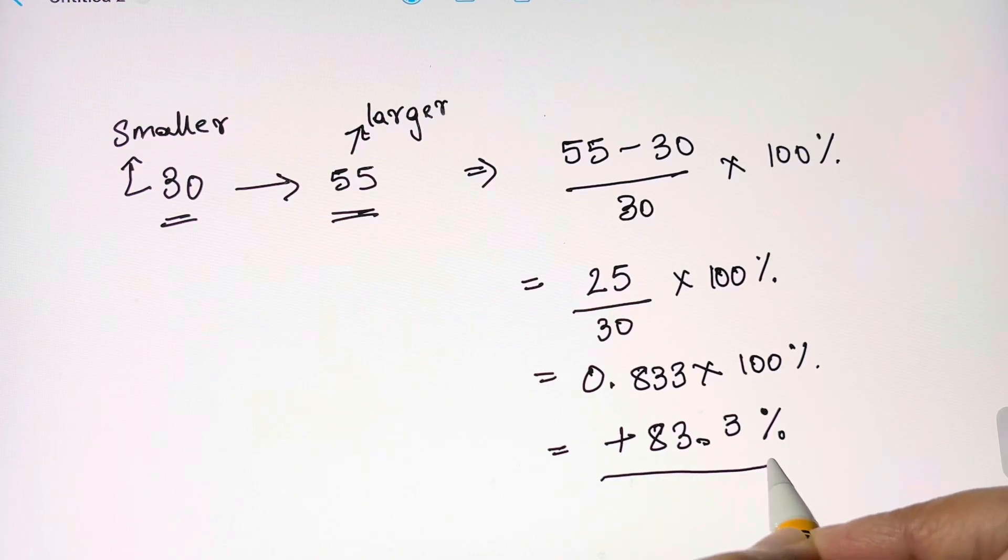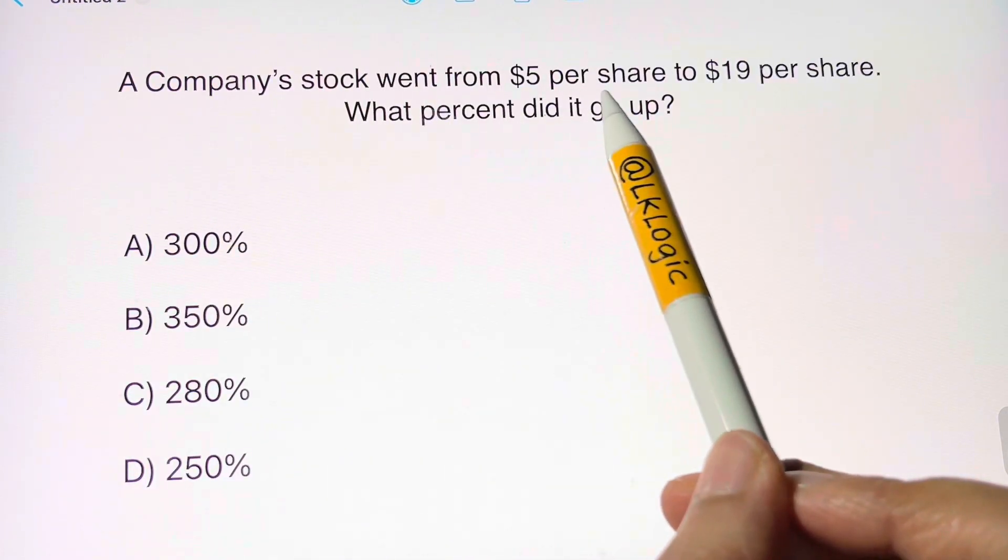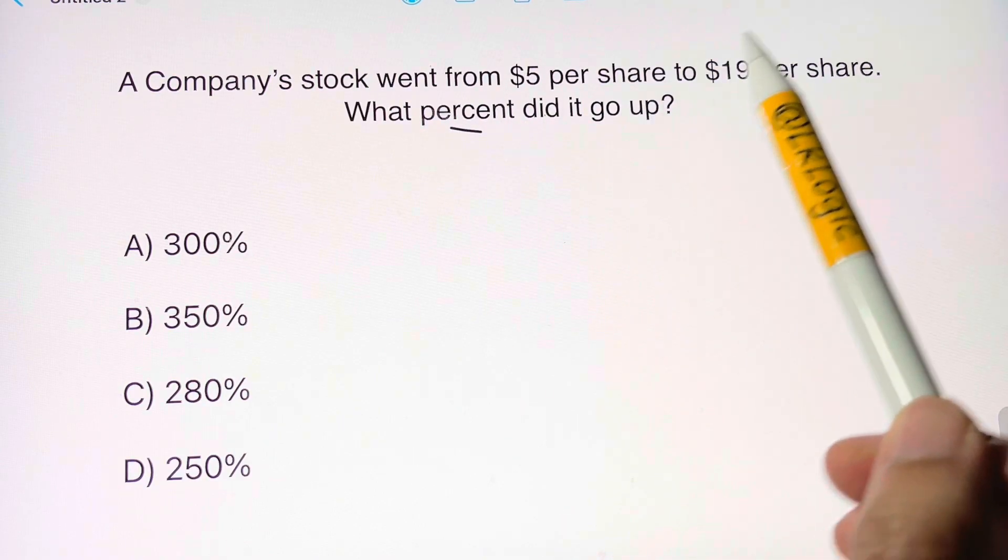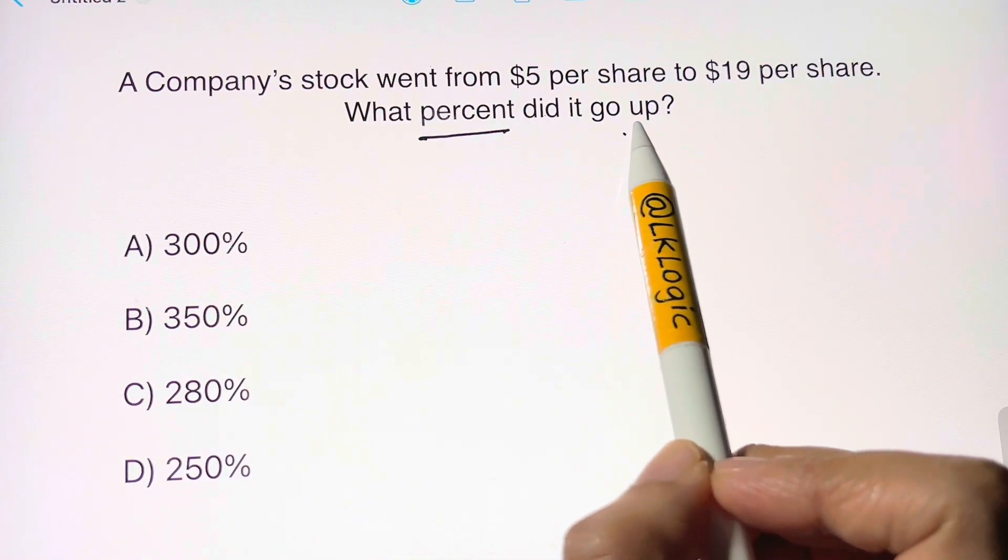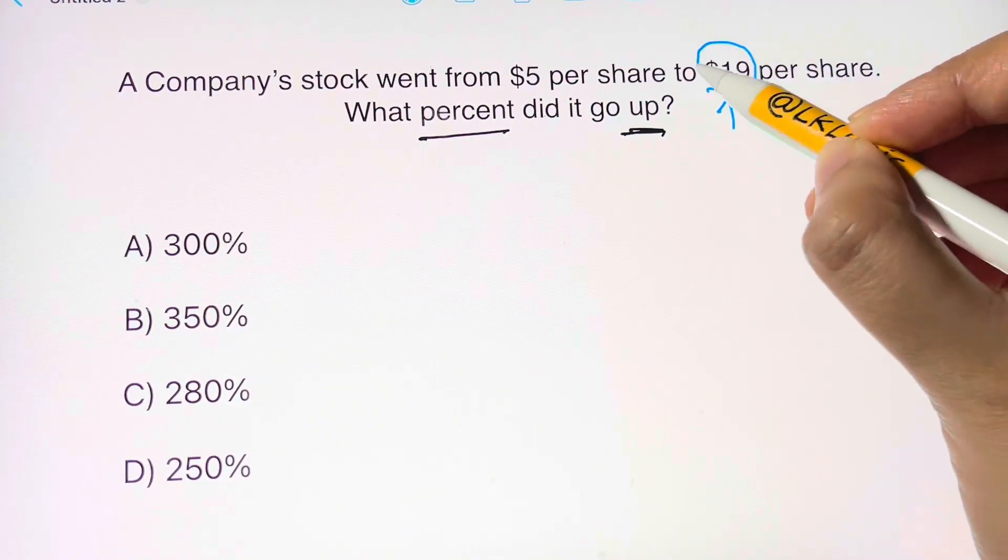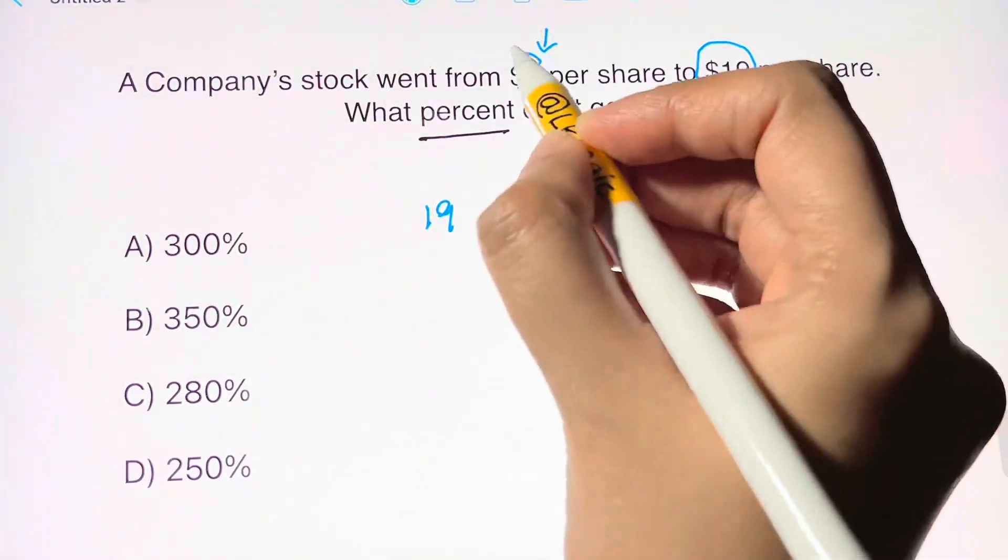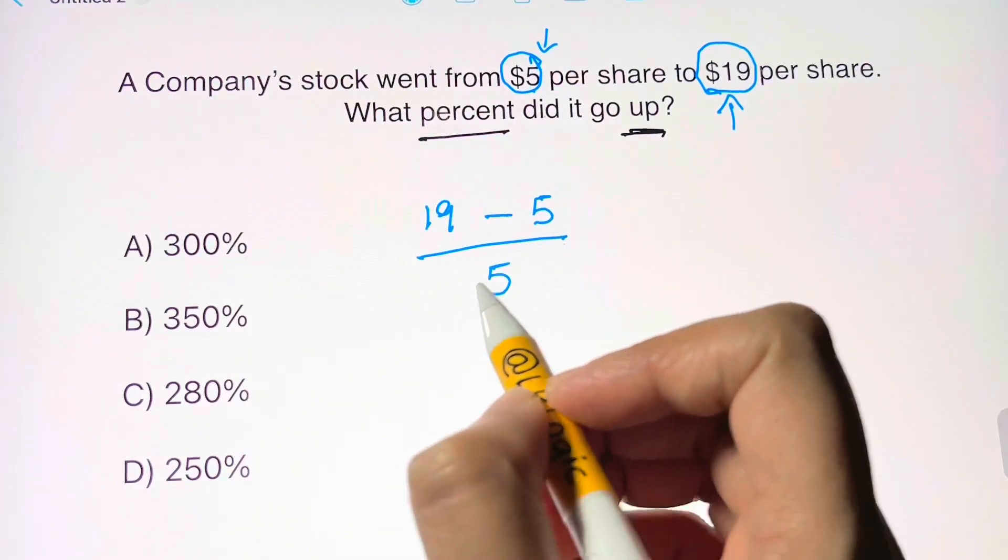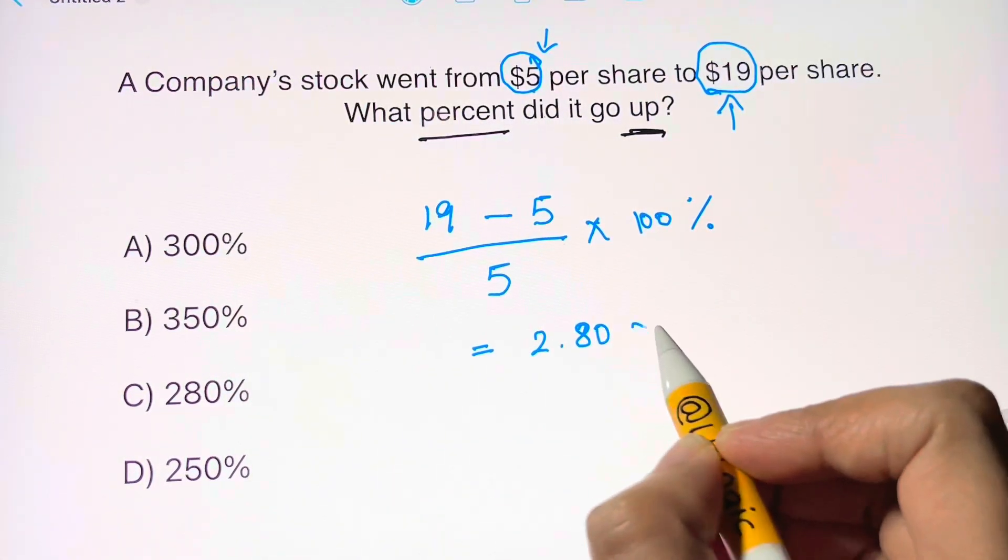A company's stock went from $5 per share to $19 per share. What percent did it go up? So here we are finding percent increase. All you need to do is take the larger number and subtract the smaller number divided by the original number, which is 5. So 14 divided by 5 is 2.8, which is 280 percent. That's your answer choice C.